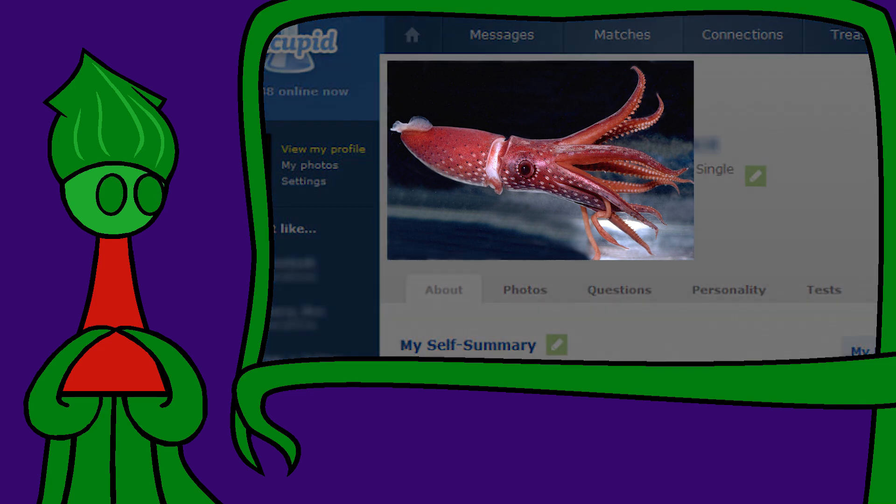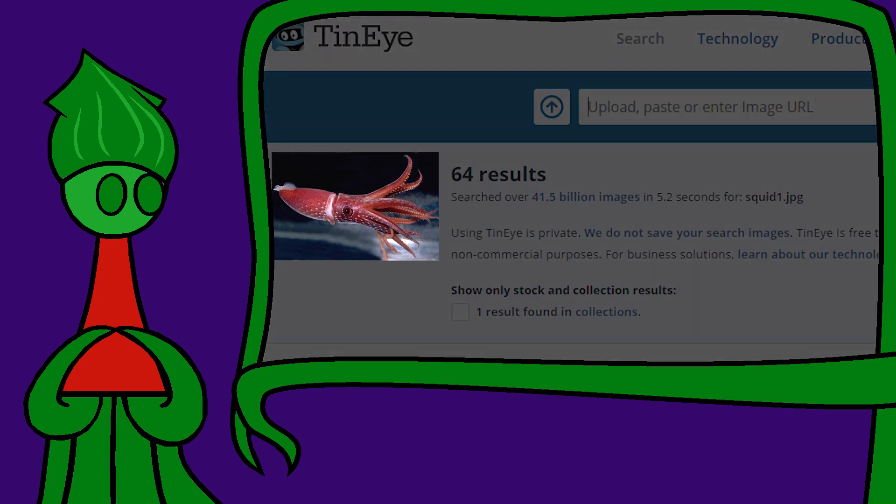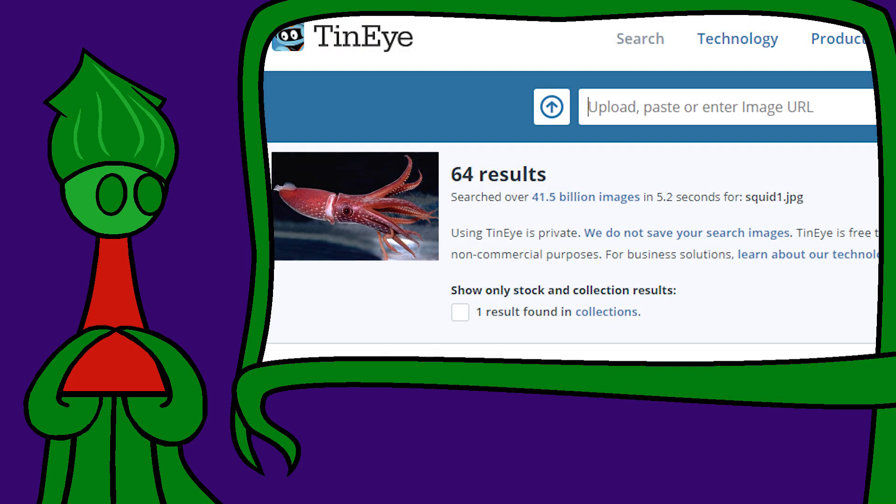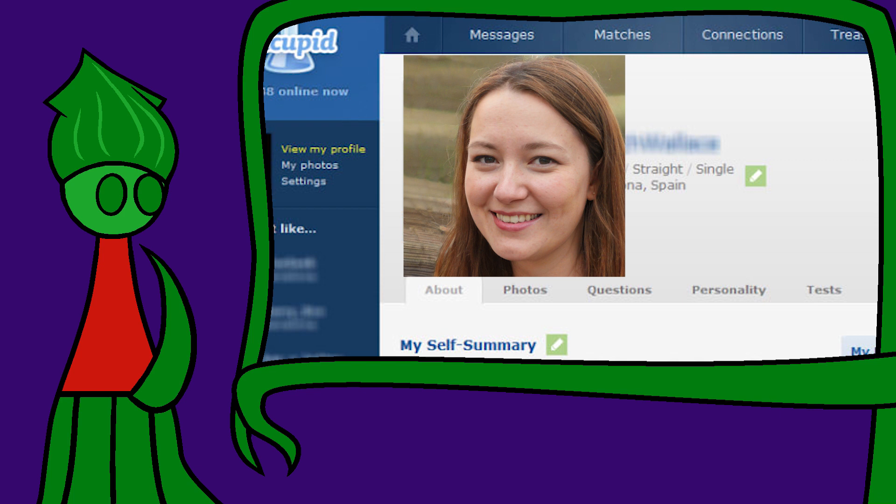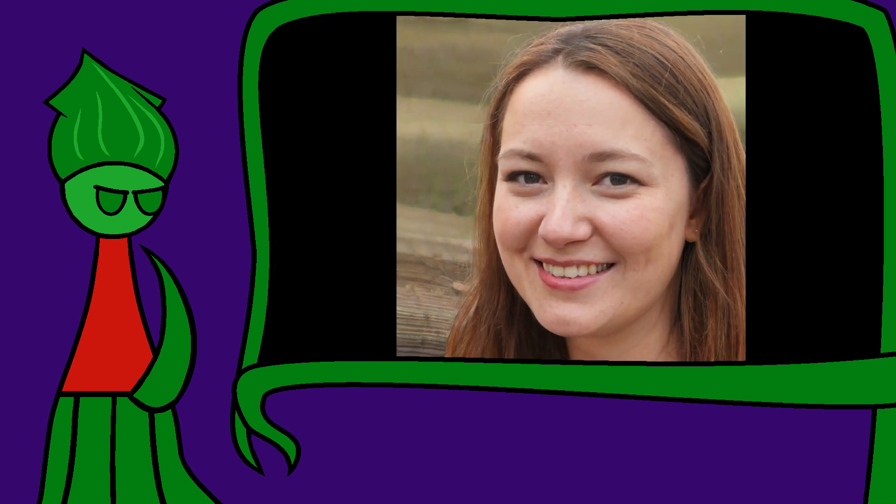You might do this by feeding their profile picture into a reverse image search to see if they're using some supermodel's portfolio shots. But a profile picture produced by a GAN might look like a real attractive person, and it wouldn't pop up in a reverse image search, helping catfishers seem authentic. To check if someone is really real, we have to resort to new methods.